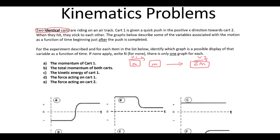So if we think about applying conservation of momentum, we know that Mv1 must be equal to 2Mv2, so v1 is equal to 2v2. Essentially what happens is the speed of cart 1 is going to halve as part of this collision.